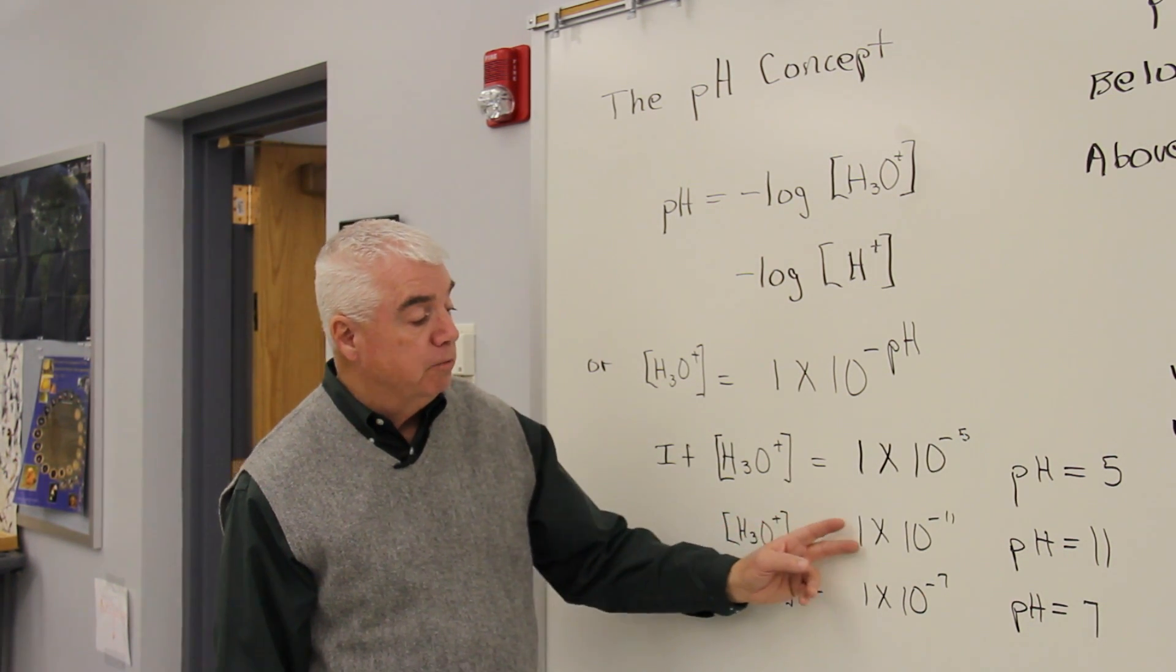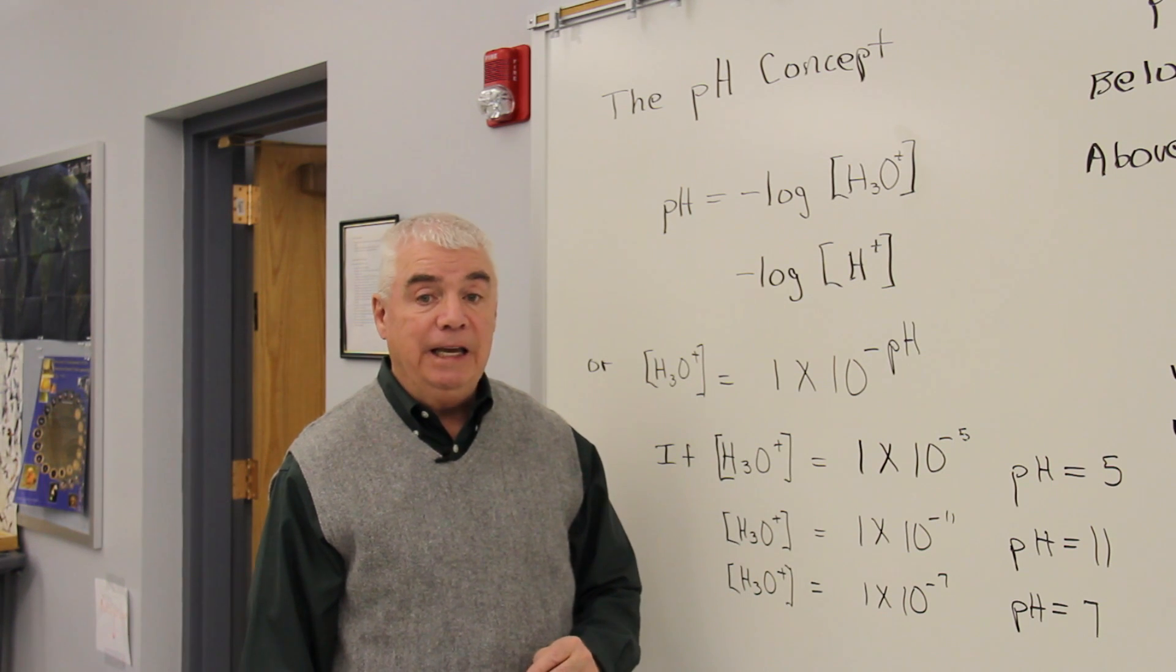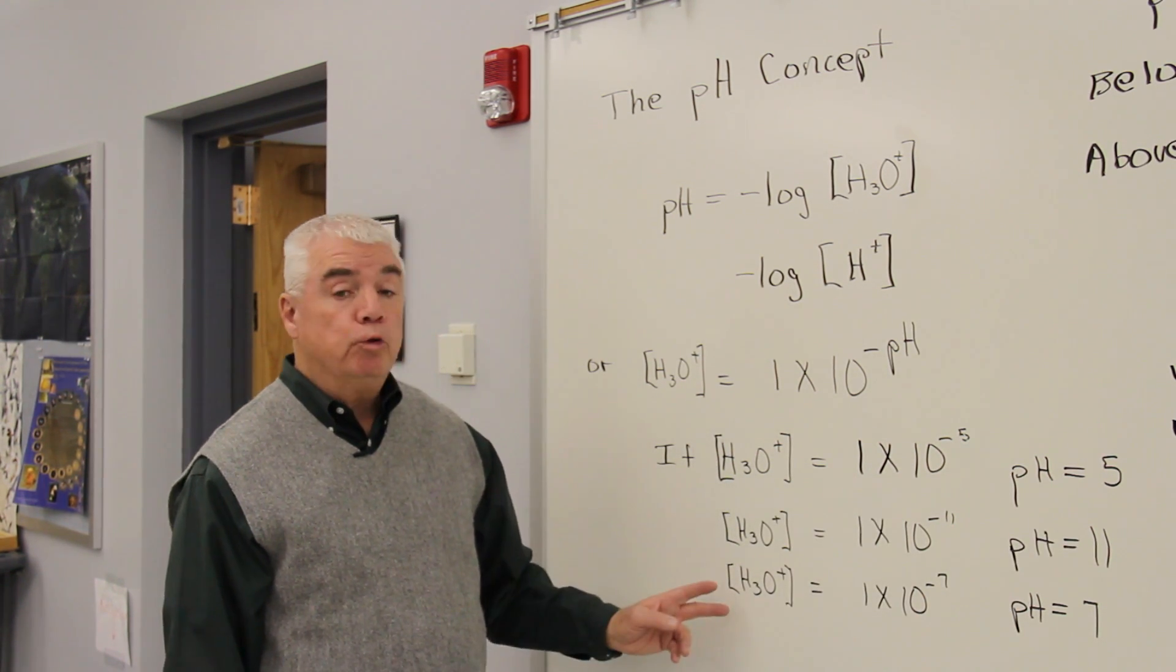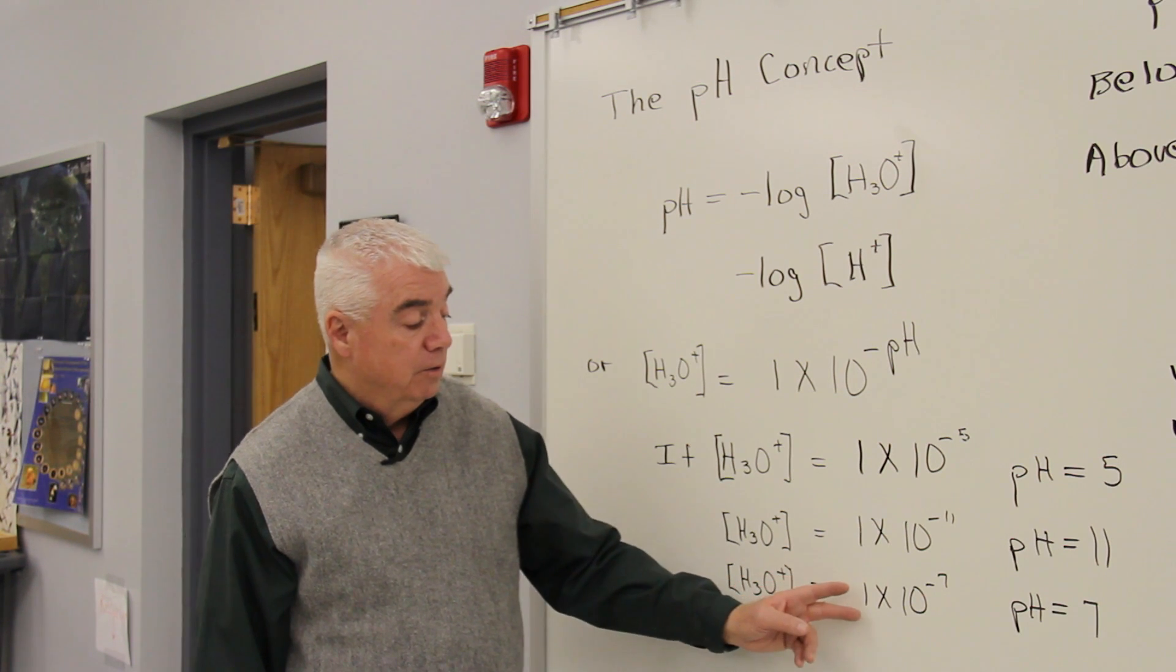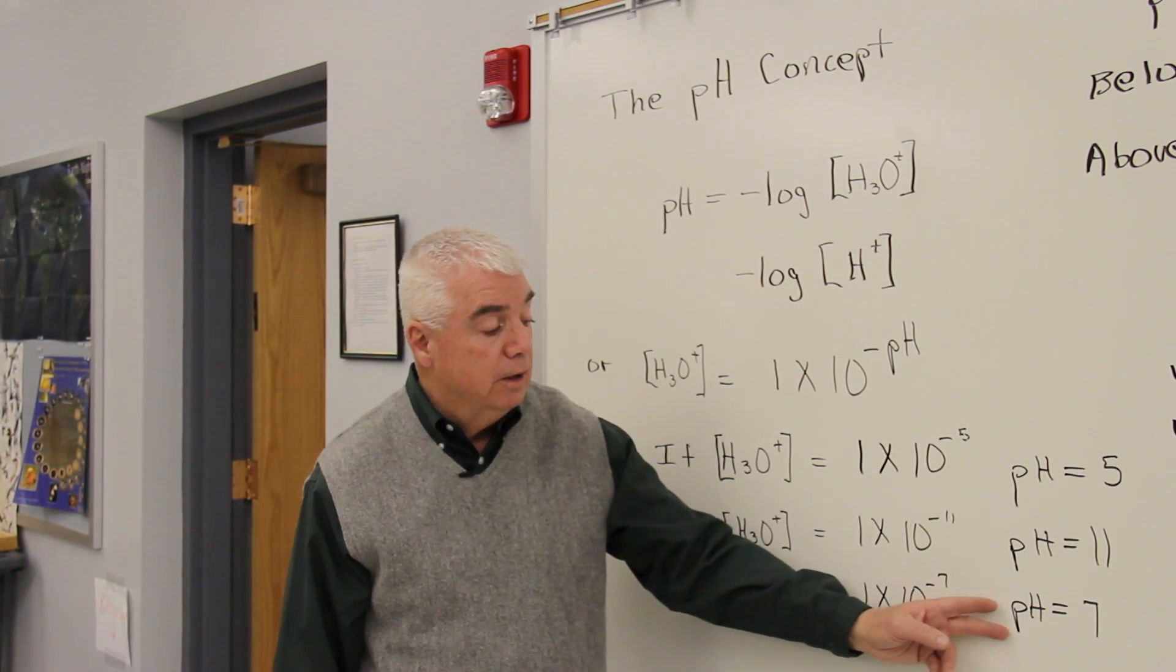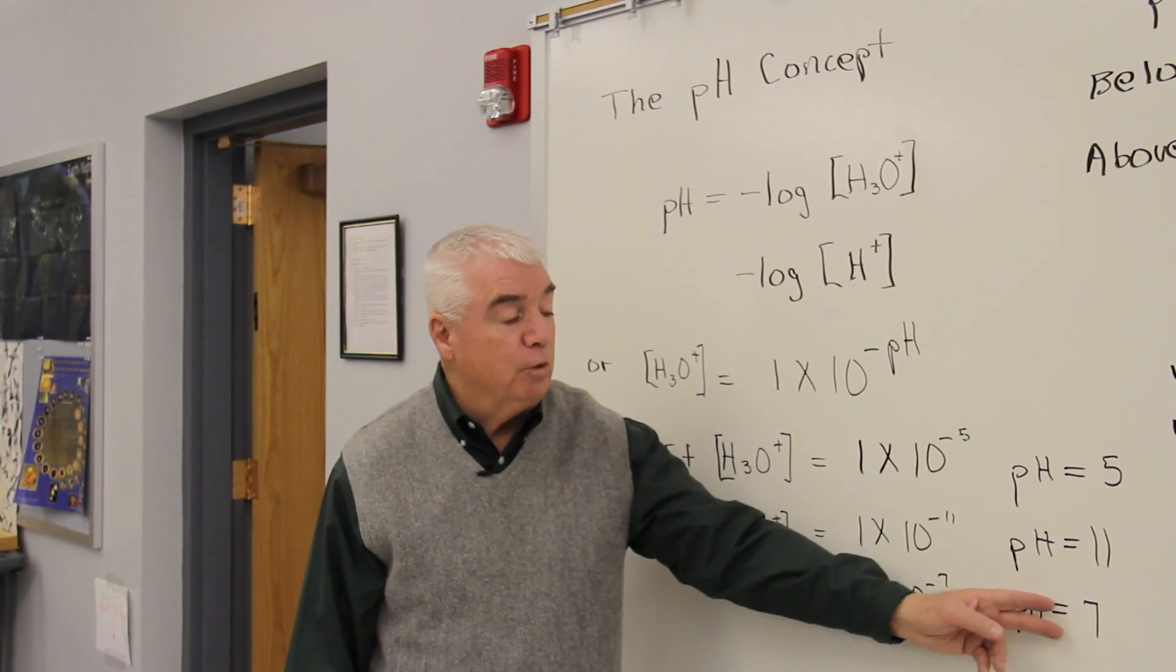Or H3O plus of 1 times 10 to the minus 11, pH would be 11. For a neutral solution, when our concentrations are 10 to the minus 7th molar, a neutral pH would be 7.